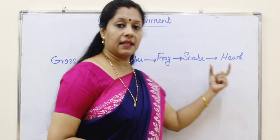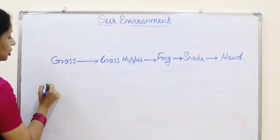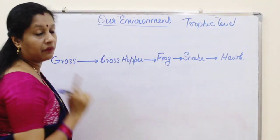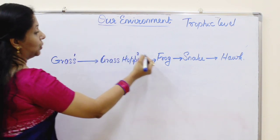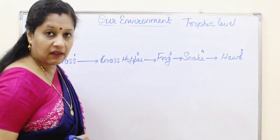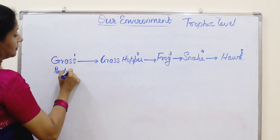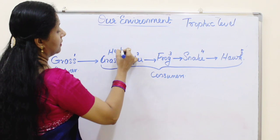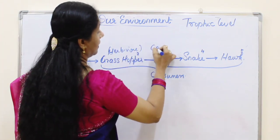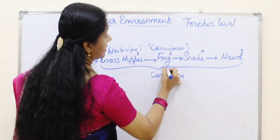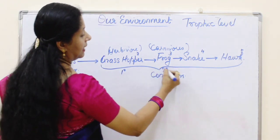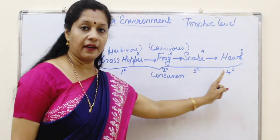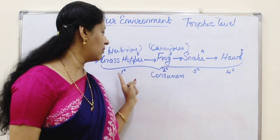Different organisms exist at different levels, and these levels are called trophic levels. In the grassland food chain, there are five trophic levels. Grass is the producer, while the rest are consumers. The grasshopper is the herbivore or primary consumer, followed by secondary consumer, tertiary consumer, and quaternary consumer. When counting trophic levels we include the producer, but when counting consumers we start from the herbivore.